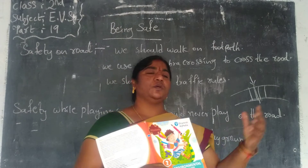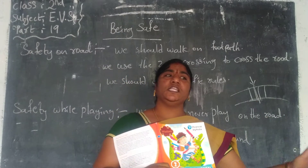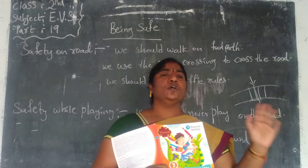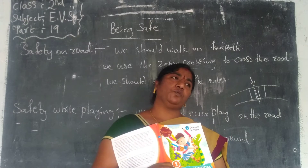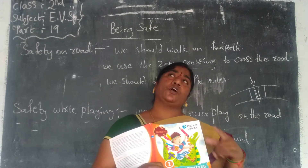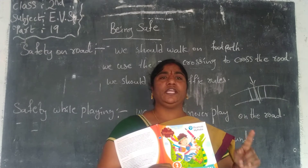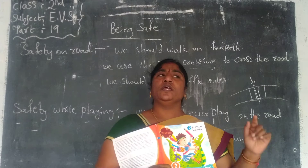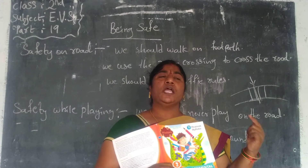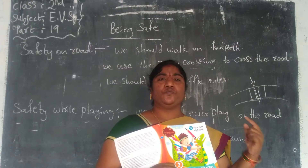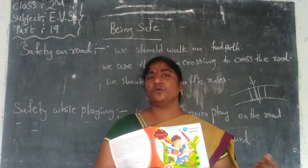The traffic constable will be there and will signal you to go, stop, or wait. Traffic lights are also there — red means stop, yellow means wait, and green means move.